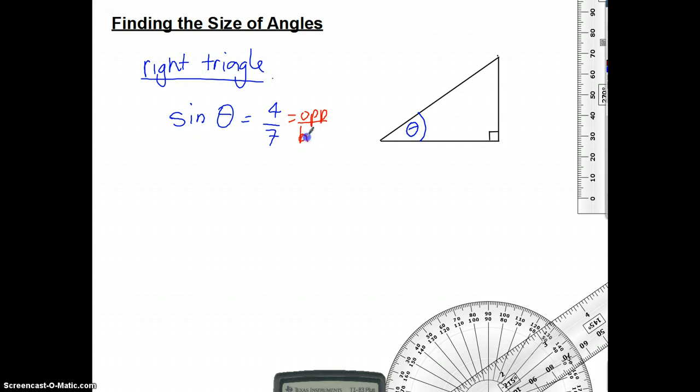and this is our hypotenuse, isn't it? So over here, I've got my opposite side. In this case, it's 4, and my hypotenuse is 7.